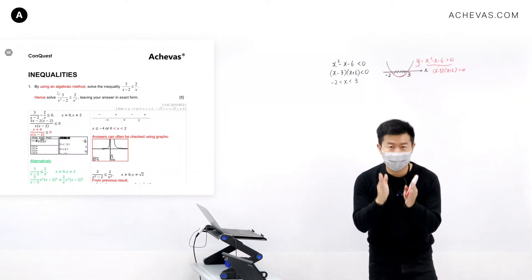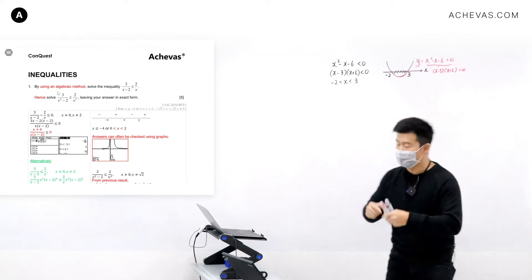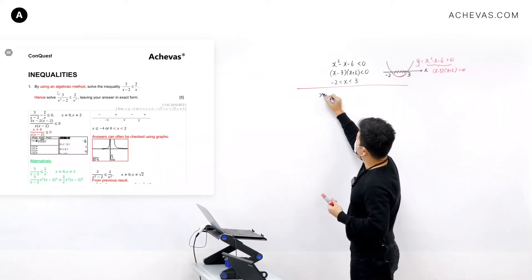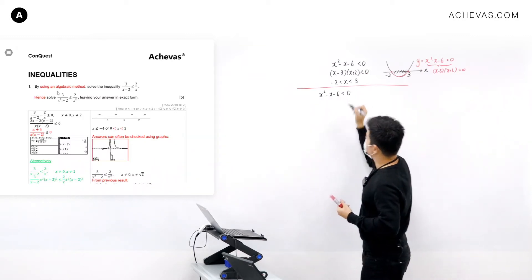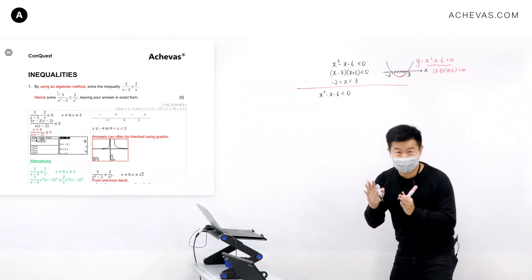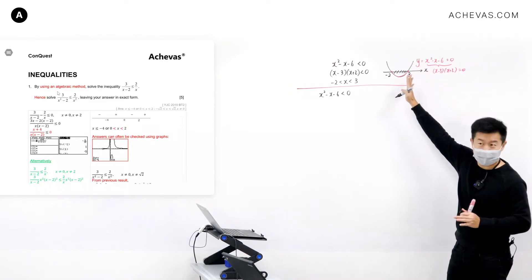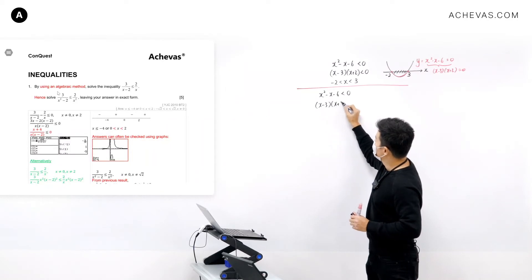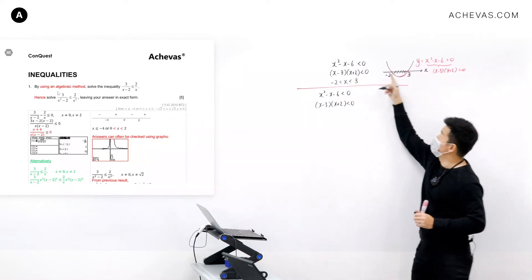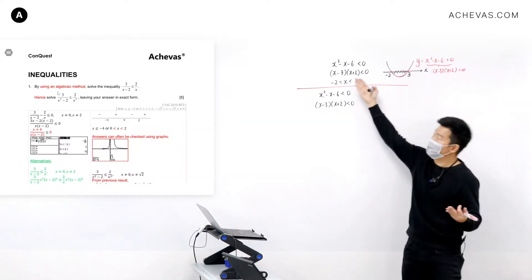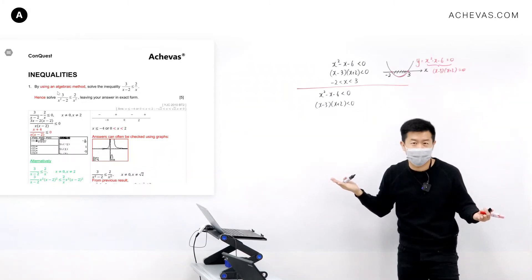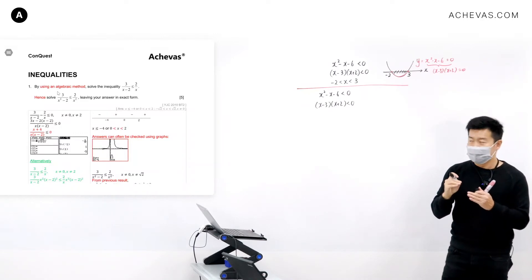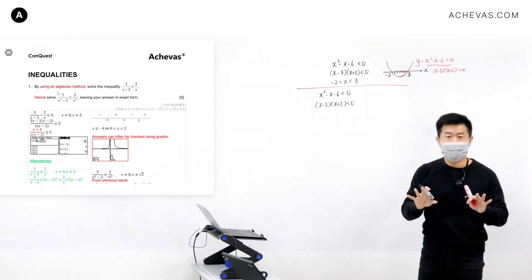I'm going to show you exactly how this algebraic method is supposed to work. So if I'm supposed to solve x squared minus six less than zero algebraically — without referring to the graph at all — I need to factorize it, but with a different purpose. I factorize it to do an algebraic analysis, not to sketch a graph. After I factorize this into two parts, I can analyze its sign.